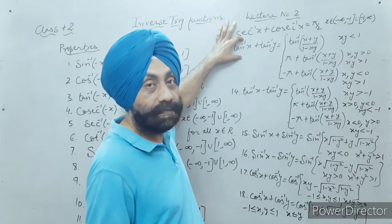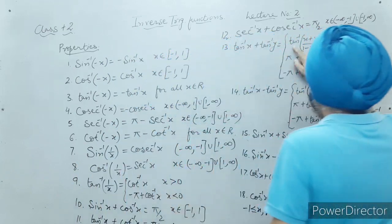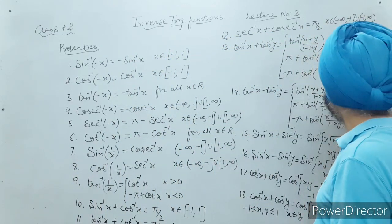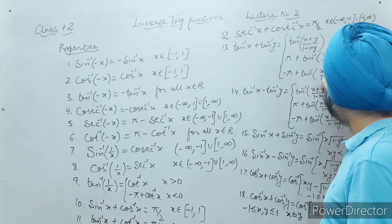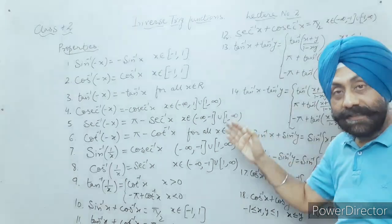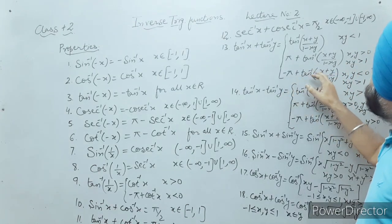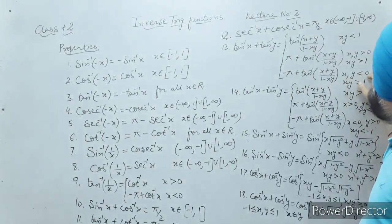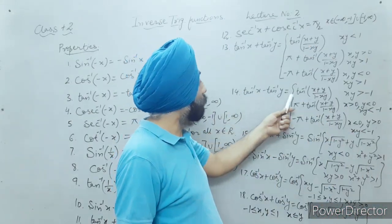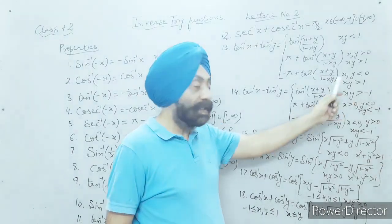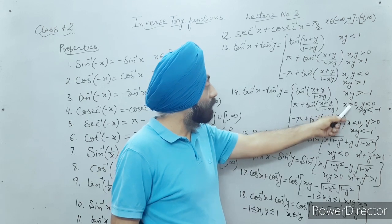This is a very important property: tan inverse x plus tan inverse y equals tan inverse of (x plus y) upon (1 minus xy), if xy is less than one. It equals pi plus tan inverse (x plus y) upon (1 minus xy) if x is greater than zero and xy is greater than one. It equals negative pi plus tan inverse (x plus y) upon (1 minus xy) if x is less than zero and xy is greater than one. Similarly, tan inverse x minus tan inverse y follows analogous conditions.